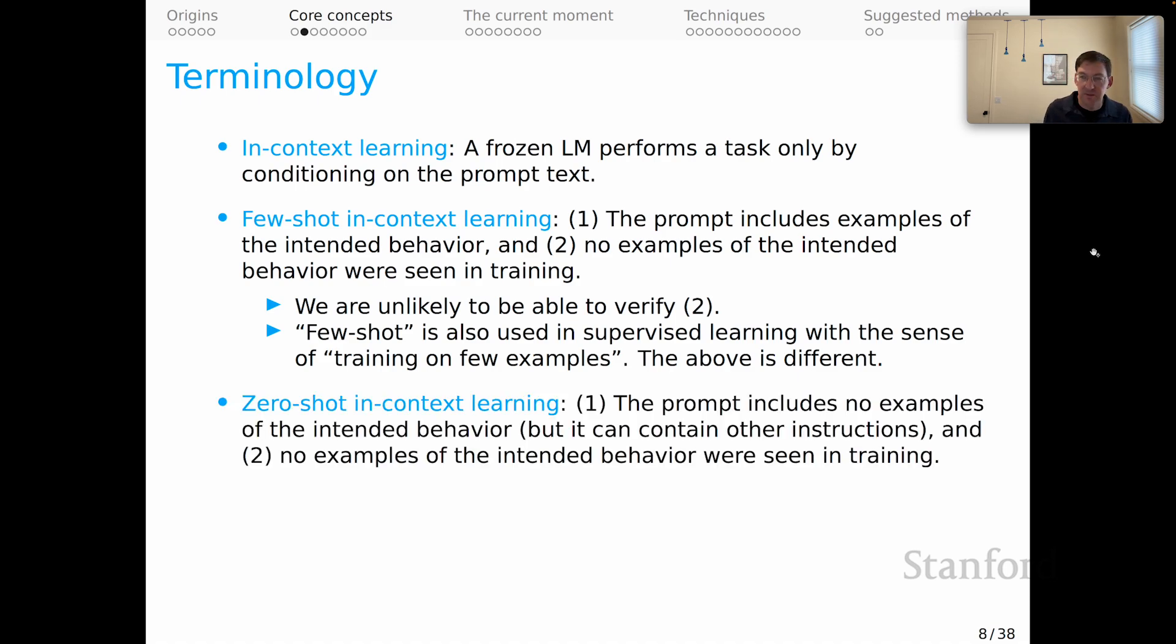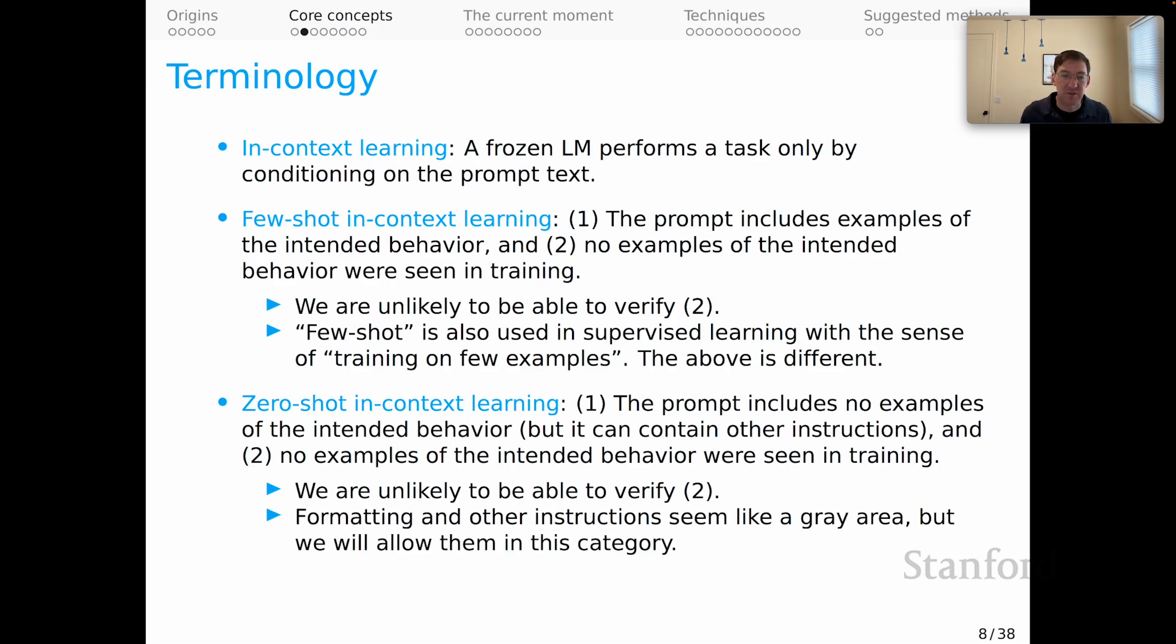Zero-shot in-context learning is another special case. This is where the prompt includes no examples of the intended behavior, but I'll allow that it could contain some instructions. And as before, item two, no examples of the intended behavior were seen in training. Again, we're unlikely to be able to verify too, so we won't know whether this is truly zero-shot, but the concept is clear.